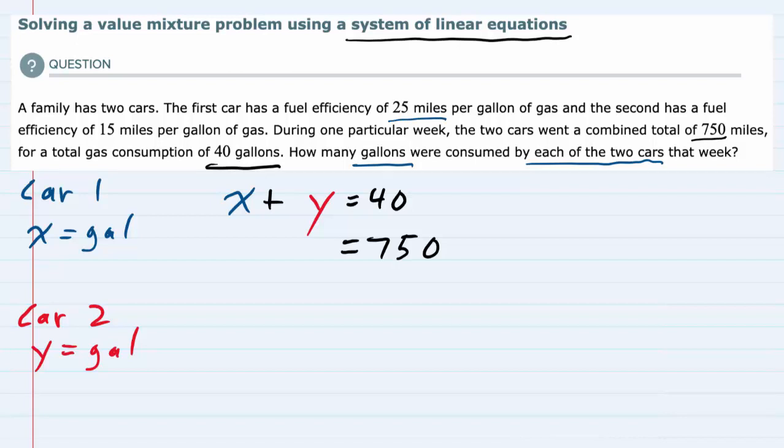If it uses one gallon, it would go 25 miles. Two gallons would be 50 miles. Three gallons, 75. So that's multiplication. The total number of miles that Car 1 goes is 25 times x. I'm going to put that into the equation: 25x, plus the second car.